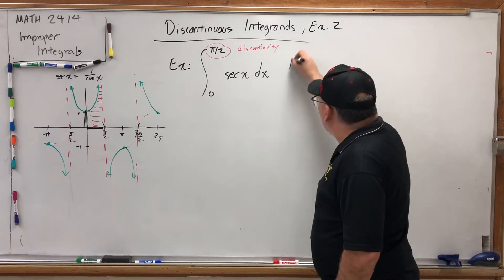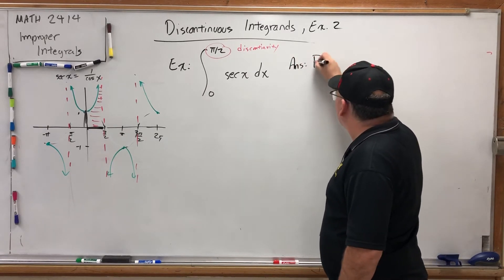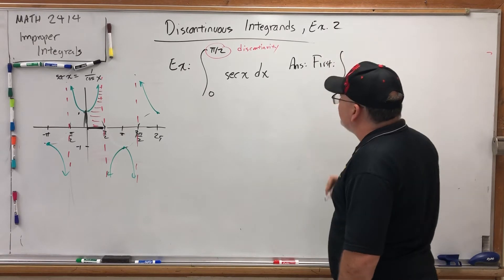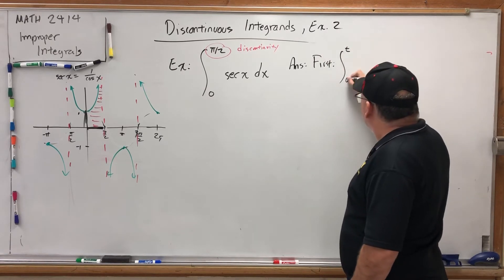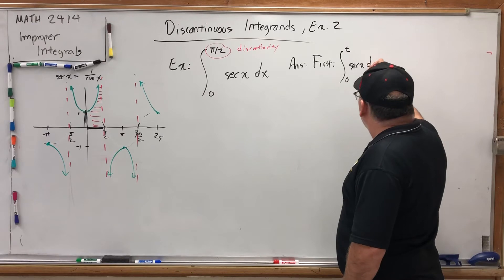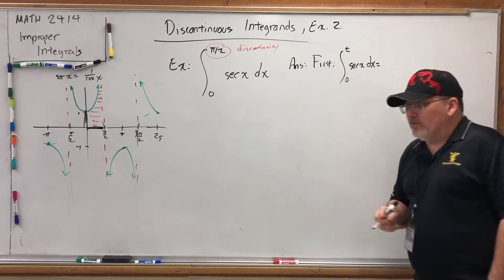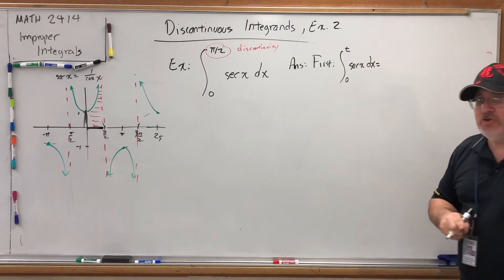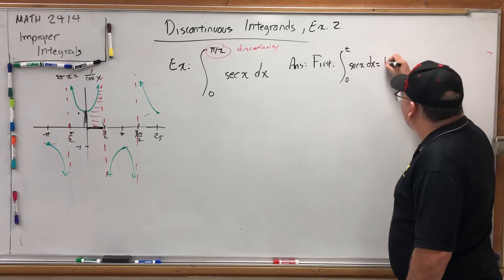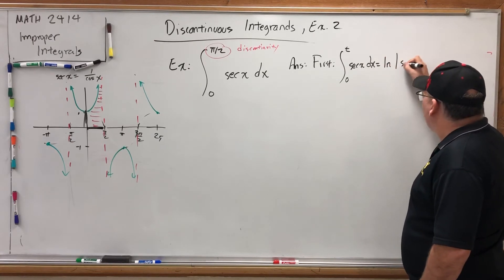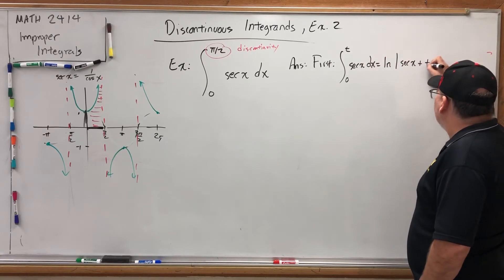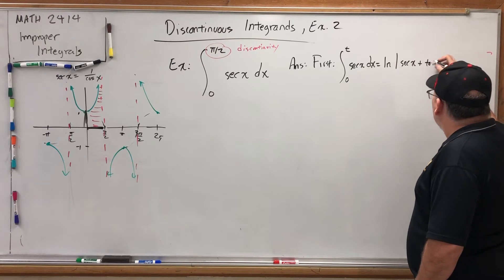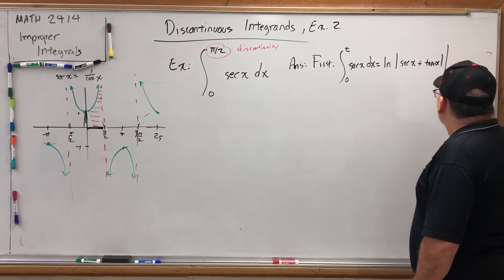We'll do the first part over here, because it won't take too much time. First, we're going to replace the discontinuity with the t. We're going to integrate secant of x dx. But that's an integral that I want you to have memorized if you don't already. And if you don't, go back and remember it. It's the natural log of the absolute value of secant x plus tangent of x.